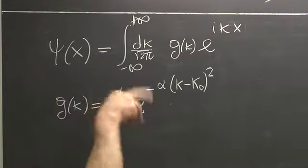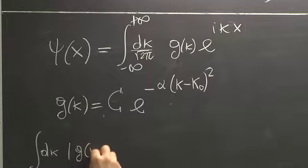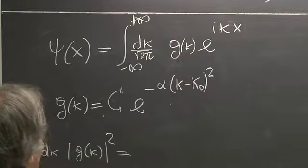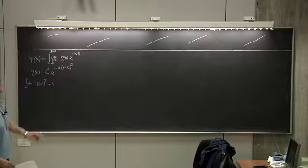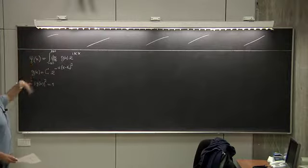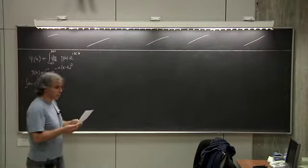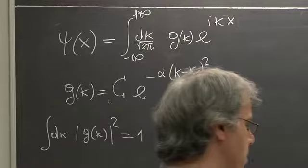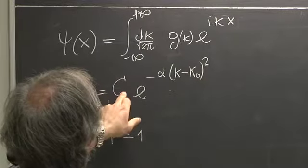We choose C in order to normalize everything. g of k is normalized so that its square modulus integrated over dk is one. The reason we insist on normalizing with the square modulus will be clear in a while — it's related to the fact that it's not psi that determines the probability, but psi modulus squared. Similarly, g of k also needs to be square-normalized, and everything is linear so multiplying by some other C just rescales psi by a different factor.